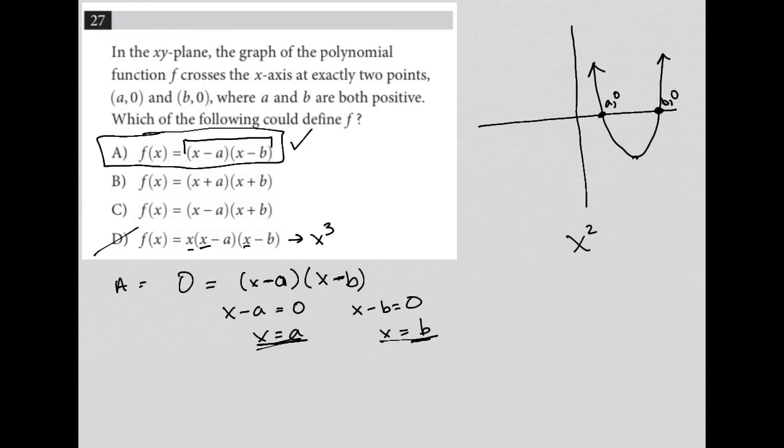If we did the work with all the other ones, we'd see this would lead us to having x-intercepts of negative A and negative B, which we don't want because the question tells us that A and B are both positive. For choice C, we'd end up with a positive A and a negative B. So that's also gone.